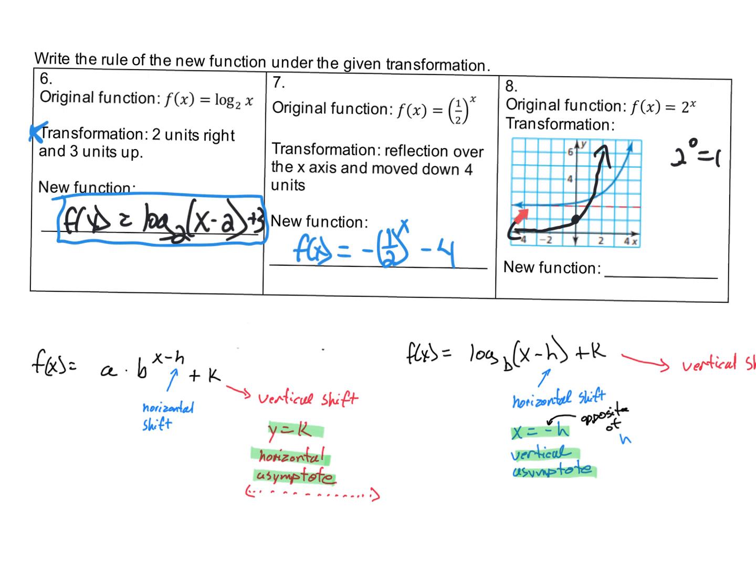You can see that it has been shifted over 2 and up 2. We know it's gone up 2 because the horizontal asymptote has moved to positive 2. This k represents the horizontal asymptote, so if it's at 2 instead of 0, then it's going to end in a plus 2.